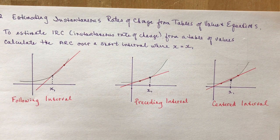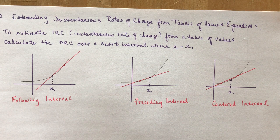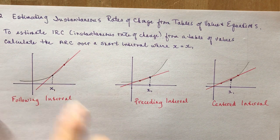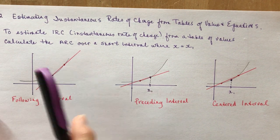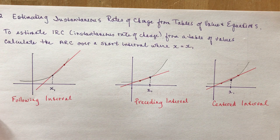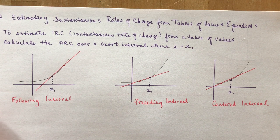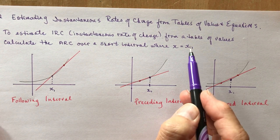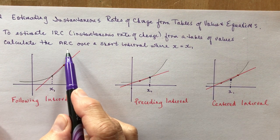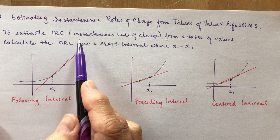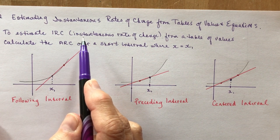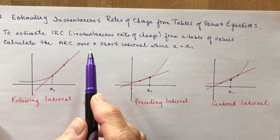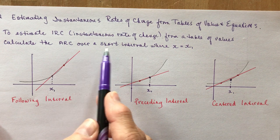When I want to know how fast you were going at a specific point in time, that's what we call the instantaneous rate of change. How fast were you going at x equals 1? To estimate the instantaneous rate of change, I'm going to use IRC because it's just a lot of work reading instantaneous rate of change. From a table of values, calculate the average rate of change. We're not actually finding the instantaneous rate of change until you get into calculus and you're taking derivatives.